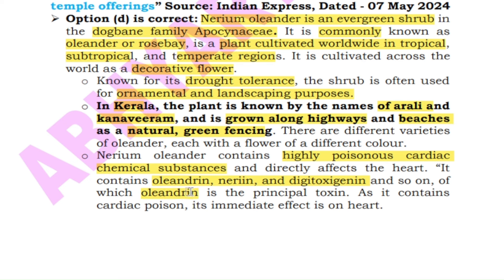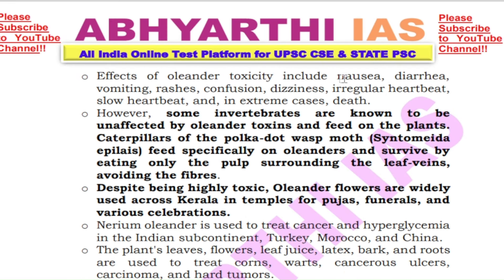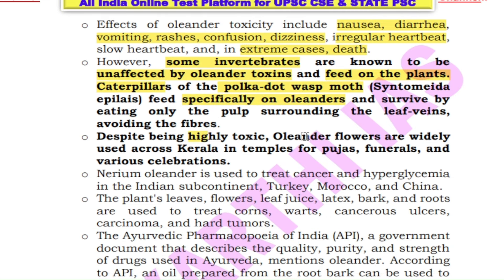The toxic effects of oleander can produce symptoms such as nausea, diarrhea, vomiting, rashes, confusion, dizziness, irregular heartbeat, and in extreme cases, death. However, some invertebrates — such as polka dot wasp moth caterpillars — are not affected by oleander toxins and actually feed on oleander plants. Despite being highly toxic, oleander flowers are widely used across Kerala in temples for puja, festivals and various celebrations.